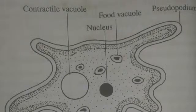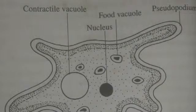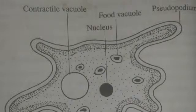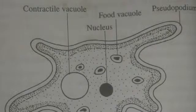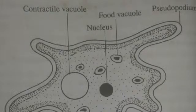Food vacuoles are feeding in function and they are the center of intracellular digestion. Contractile vacuoles are large fluid-filled vacuoles concerned with osmoregulation, so contractile vacuoles function in osmoregulation.